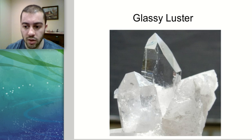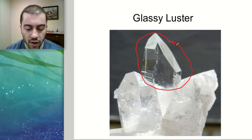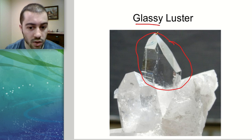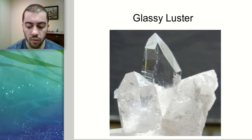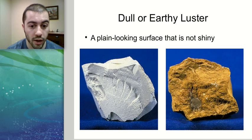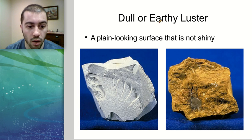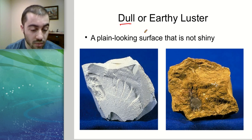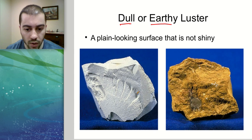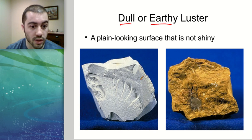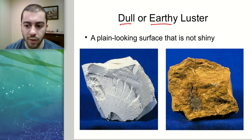Another type of luster is glassy — the mineral looks like it could be made of glass, with a translucent quality where you can see the light through it. We can also describe minerals as having a dull or earthy luster, meaning they're not shiny and may look like they have earth tone colors like brown or deep red, almost like soil or clay. The light doesn't reflect nearly as much off these minerals.